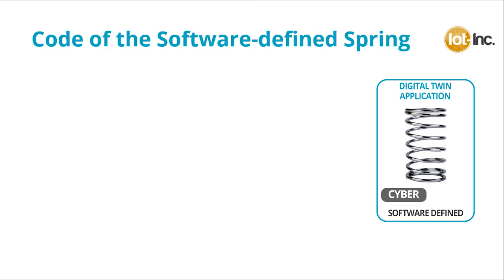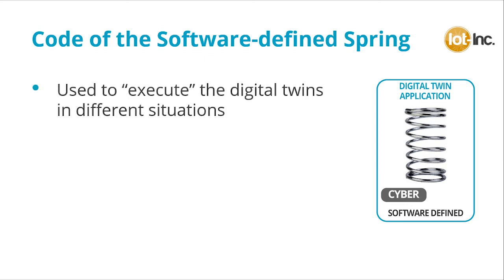Next we consider the application of the software-defined spring. This is the code used to execute the digital twin's models in different situations. For example, if this were the spring in the suspension of an automobile, the application code would apply forces that would then execute on the model.